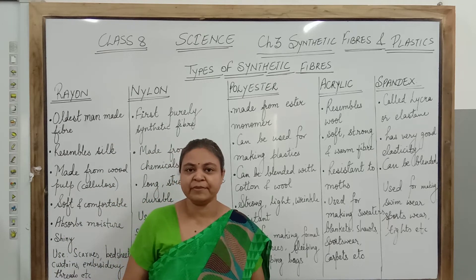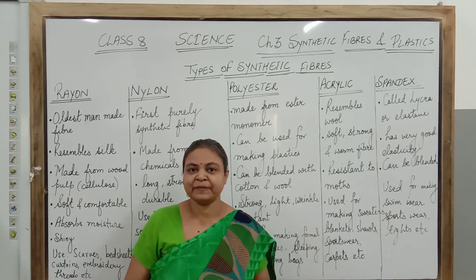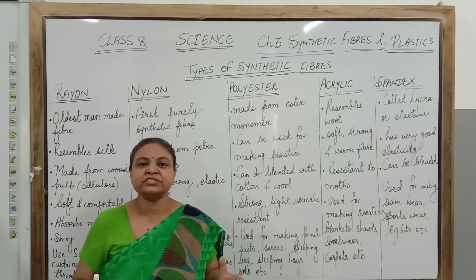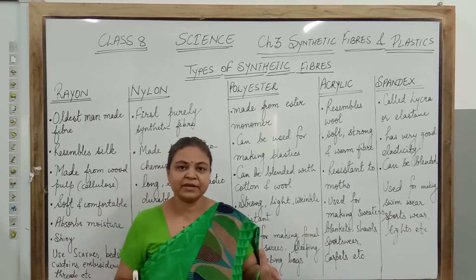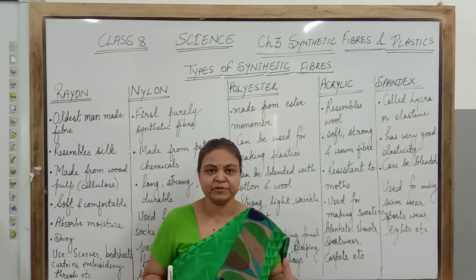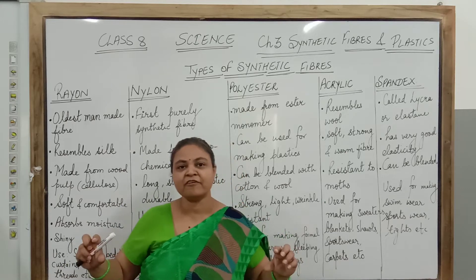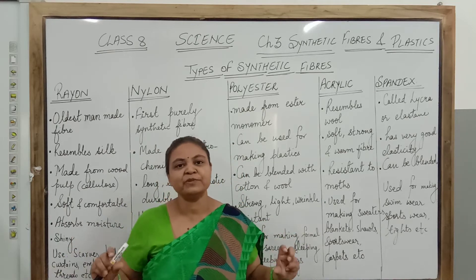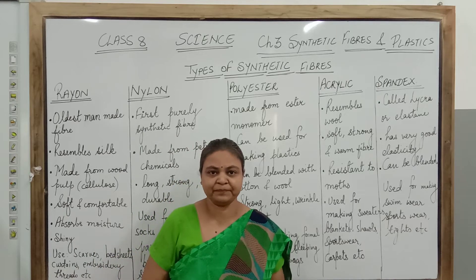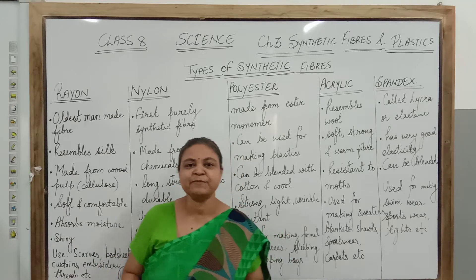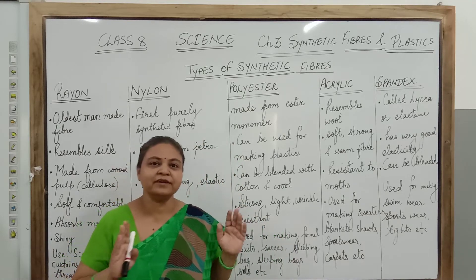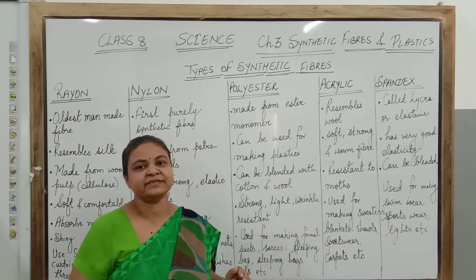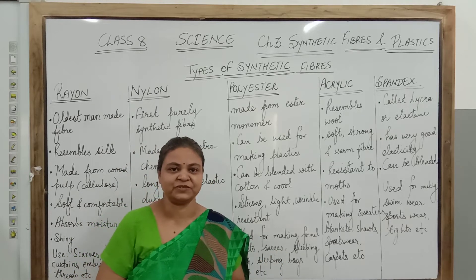We learned how synthetic fibers are made from the monomers. Monomers are the single units which help in making the polymers. Polymers are the long chain of many monomers connected together, and the process by which the monomers are joined to form the polymers is called polymerization.